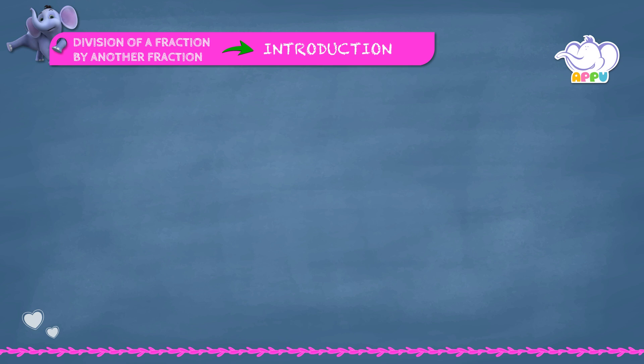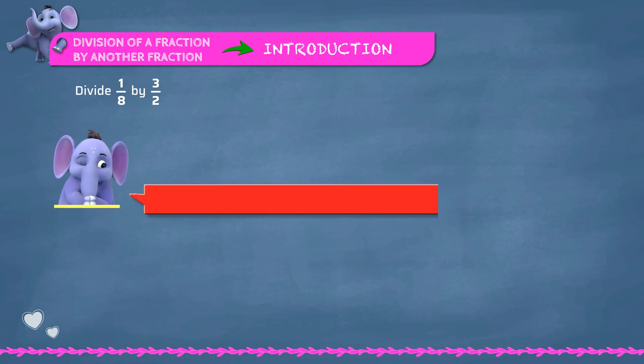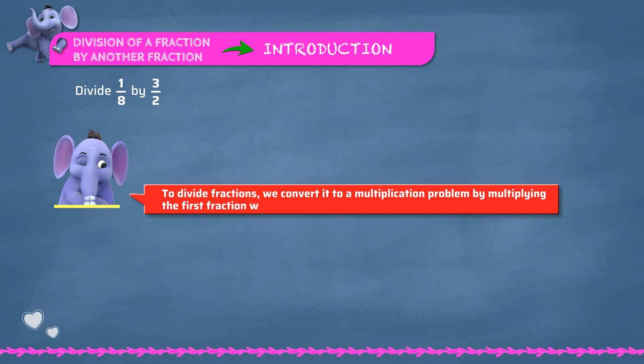Division of a fraction by another fraction — introduction. Let's look at division of fractions by another fraction. To divide fractions, we convert it to a multiplication problem by multiplying the first fraction with the reciprocal of the second fraction.